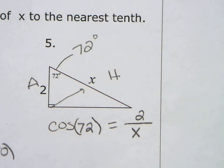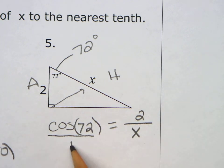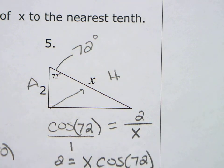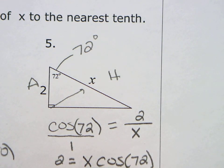A over H. Now this one's a little harder. The X is on the bottom. So I'm going to put this over one and cross and multiply. What's one times two? Two equals X times cosine of 72. So that's X cosine of 72. Now what are these doing? They're multiplying. What's the inverse of multiplying? Dividing. So we're going to divide both sides by cosine of 72.